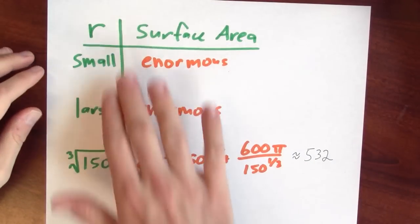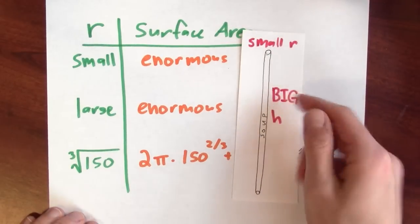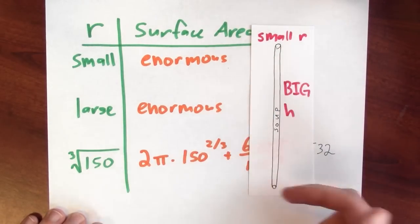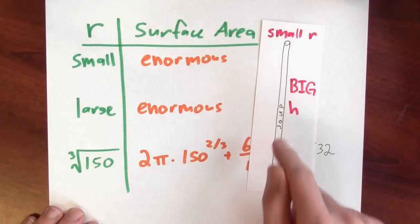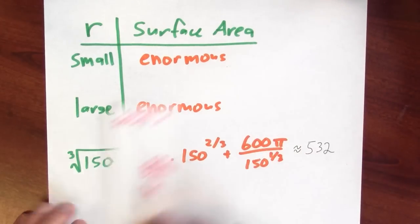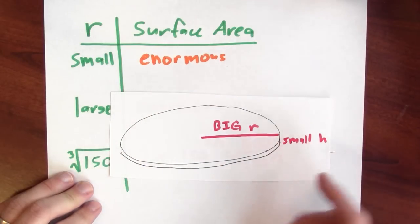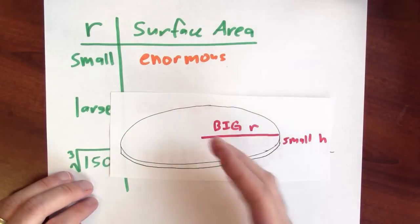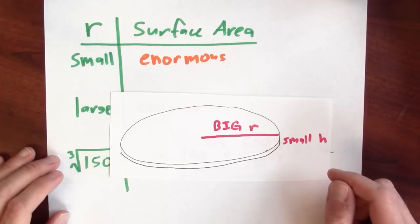We actually already handled the limiting behavior. We've already considered the situation when r is really small. That's the situation where the soup can is like a long, thin wire. And we checked in that case, the surface area is enormous. If r is small enough, the surface area can be as large as you like and still hold 300 pi cubic centimeters of soup. We also considered the situation where r was really large. When r was really big, we had this sort of flat pancake shape for the soup can. And in that case, we again saw that if r is big enough, the surface area can be made as large as you like while still having that soup can contain 300 pi cubic centimeters of soup.